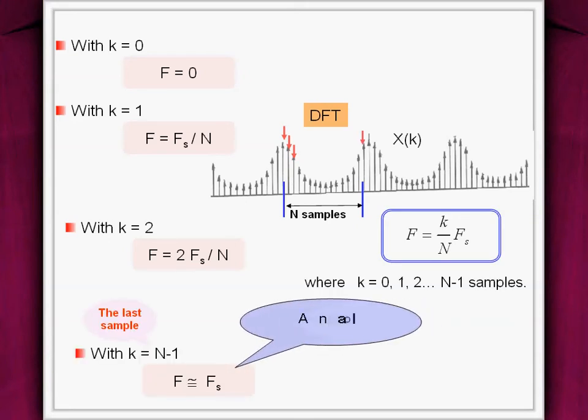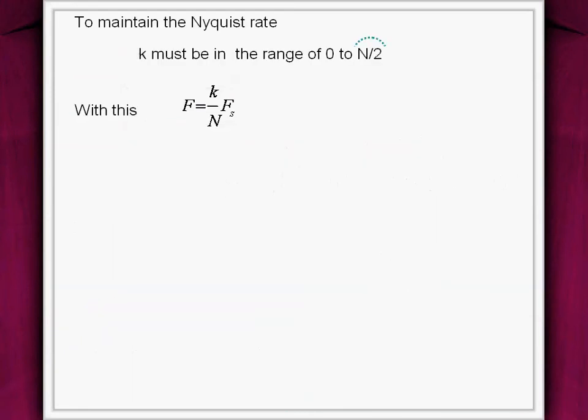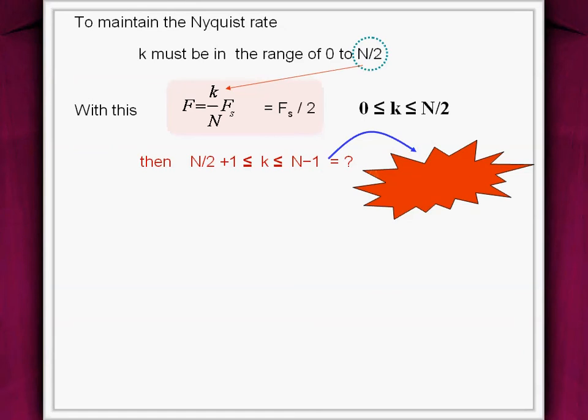This way, the last DFT sample corresponds to sampling frequency. This yields corrupted result as there can be no frequencies above the Nyquist rate. The Nyquist rate, if not followed, the original signal cannot be exactly reconstructed from its samples. Nyquist criteria is followed with k in the range 0 to N by 2. The remaining DFT samples from N by 2 to N-1 correspond to negative frequencies.